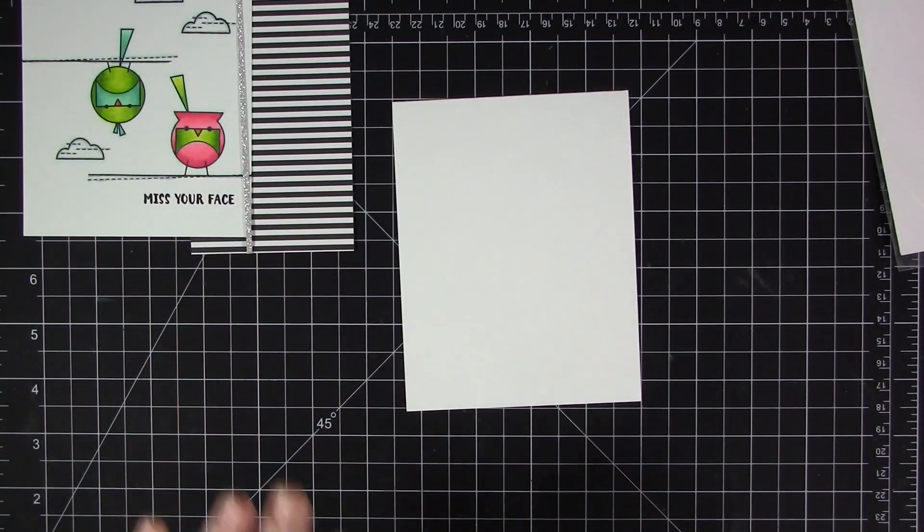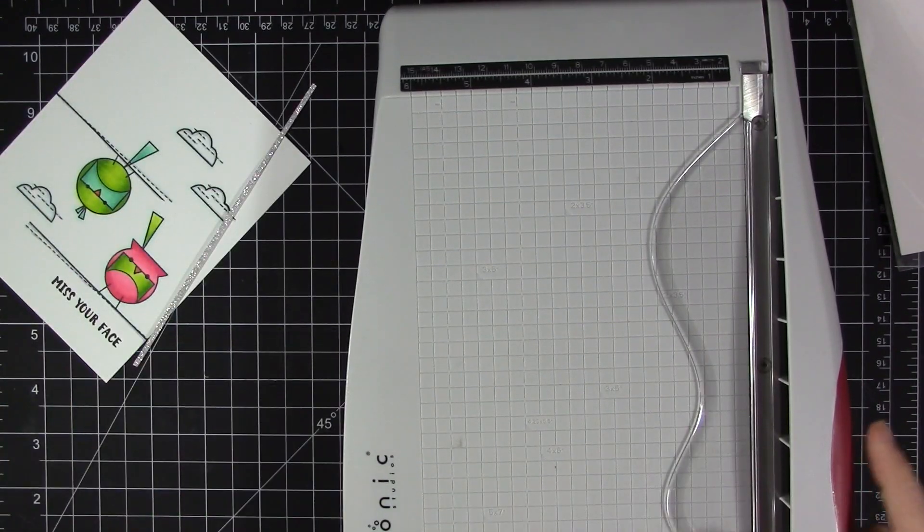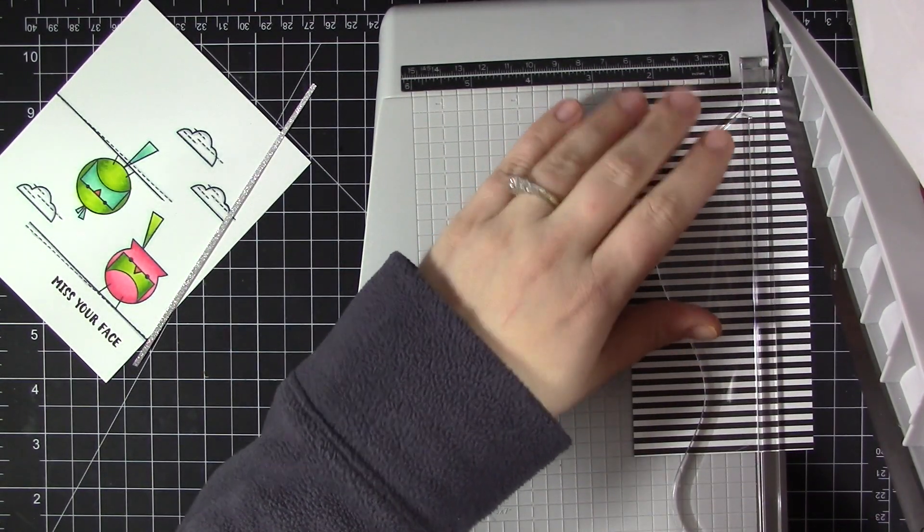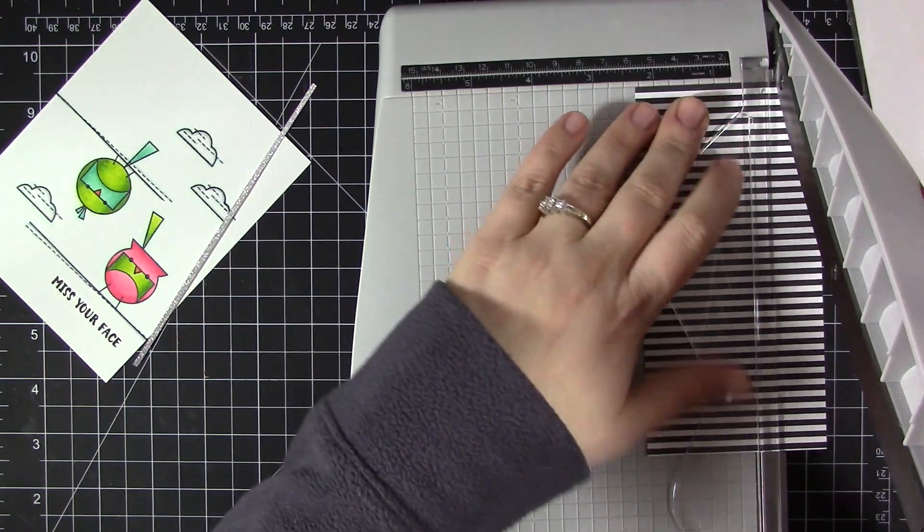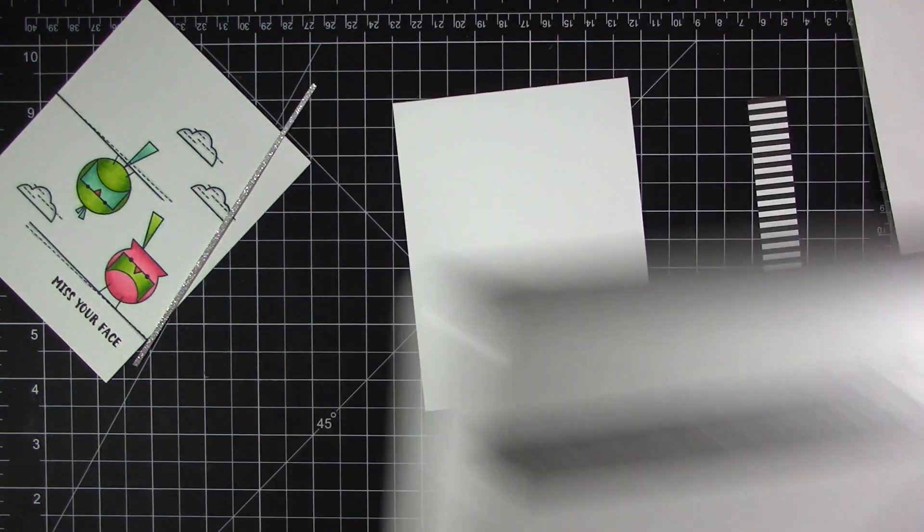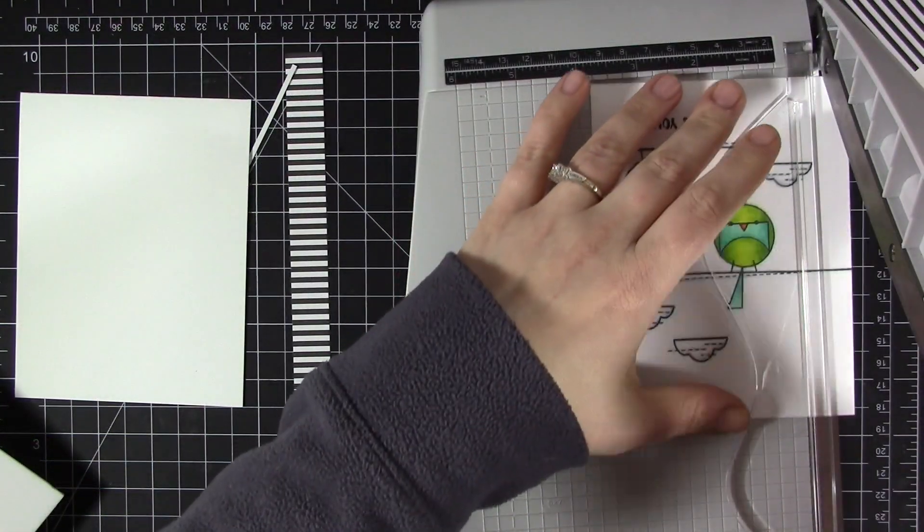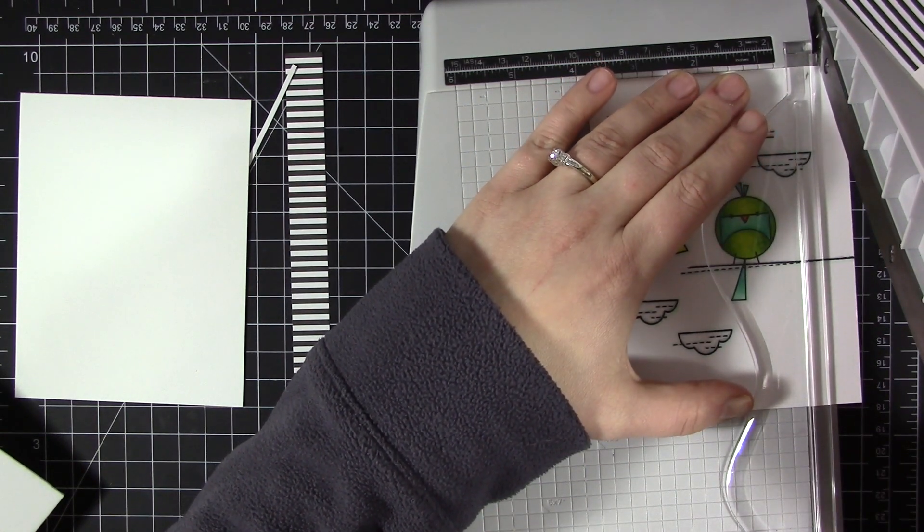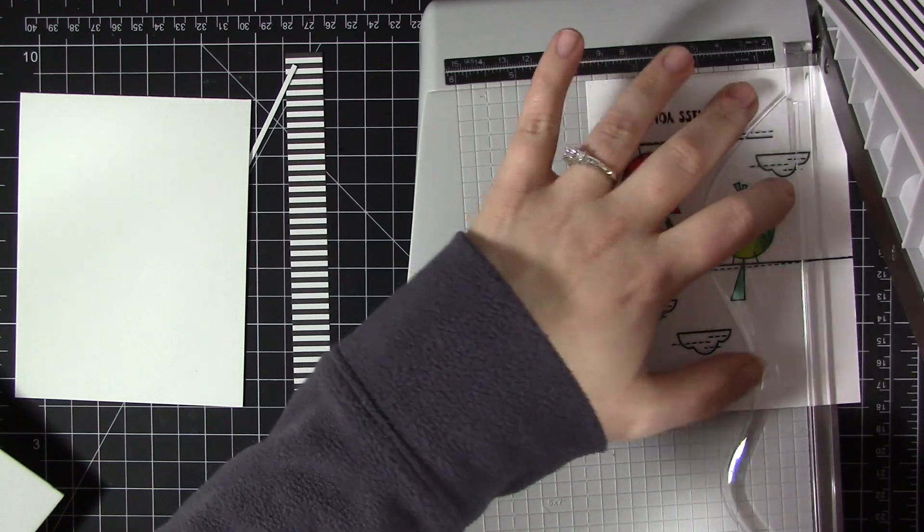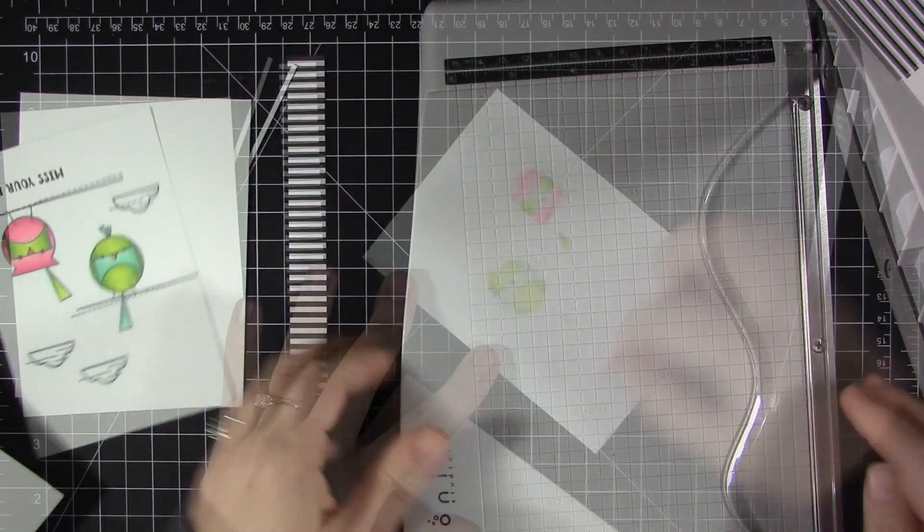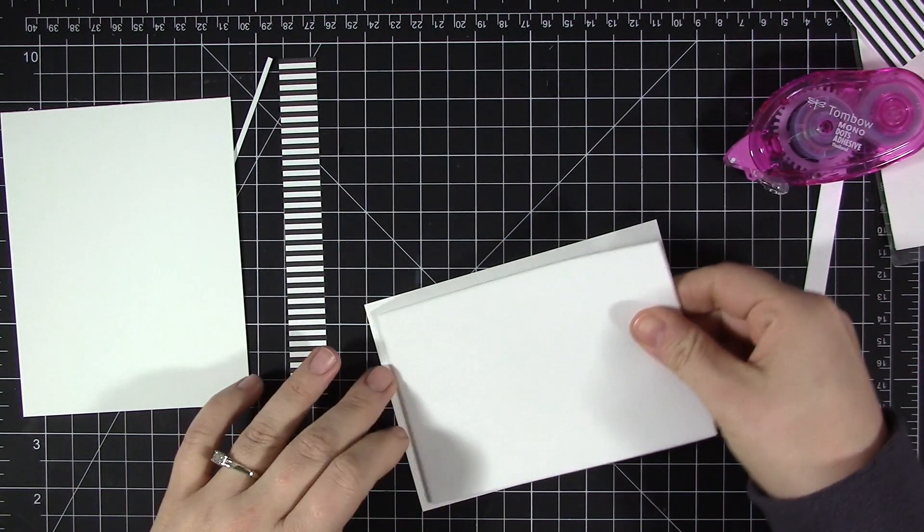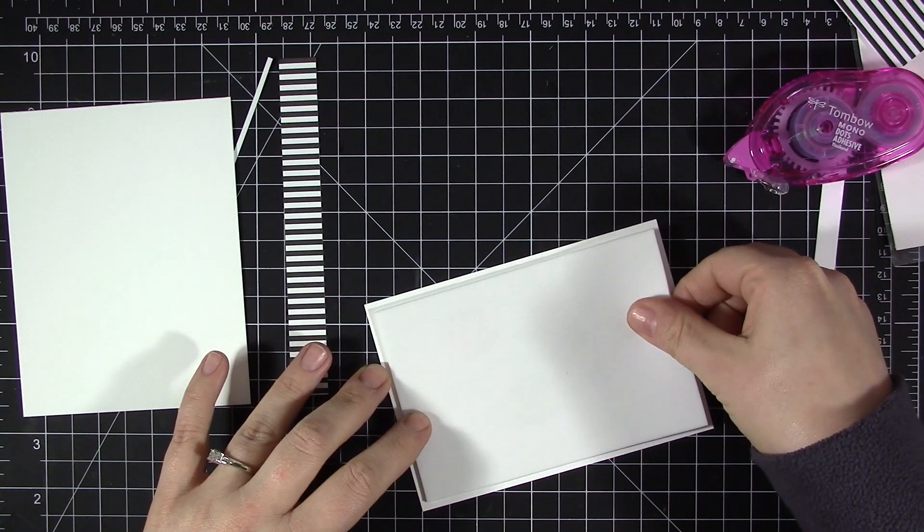Now that I have all the stamping done and the panels ready to go, it's time to put the cards together. Since it looks kind of busy but is still pretty plain because it's one layer, I just decided to add a little bit of accent on the right-hand side of the card by adding a striped black and white piece of patterned paper and a strip of silver glitter paper. I'm trimming off the side of this panel so that it's not as wide as my card base.